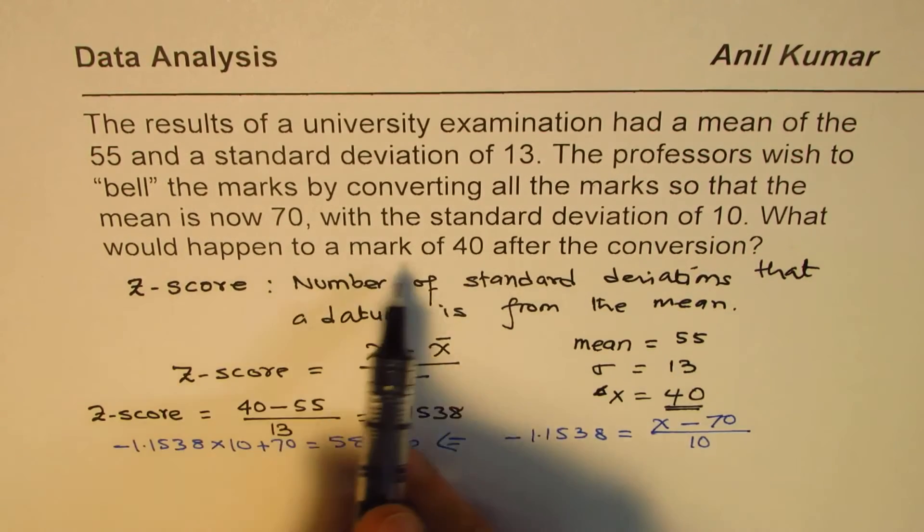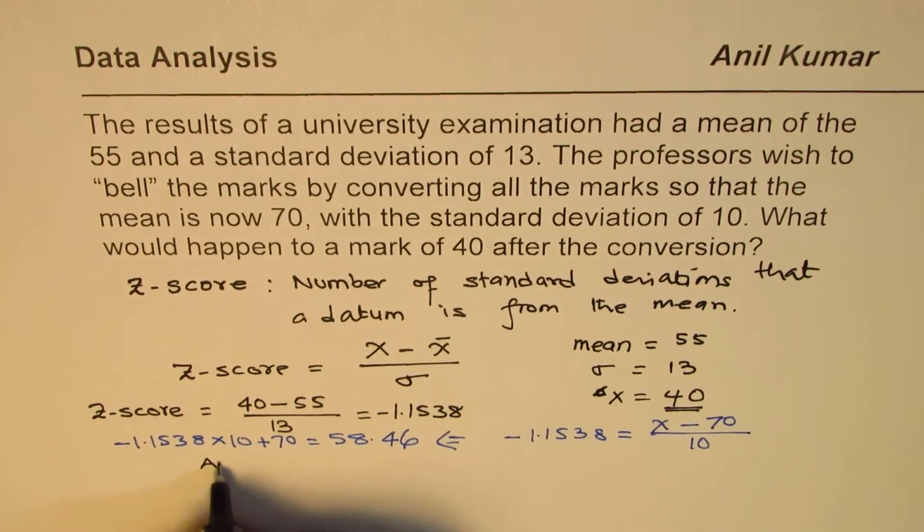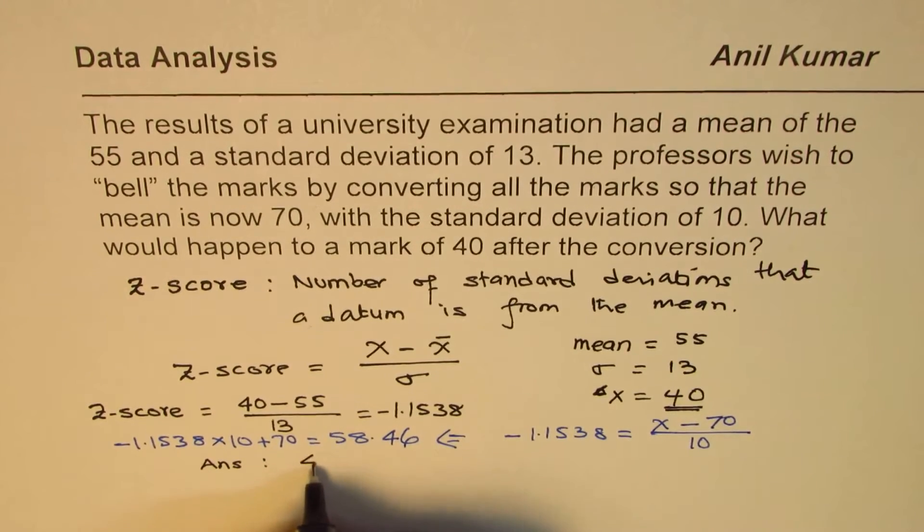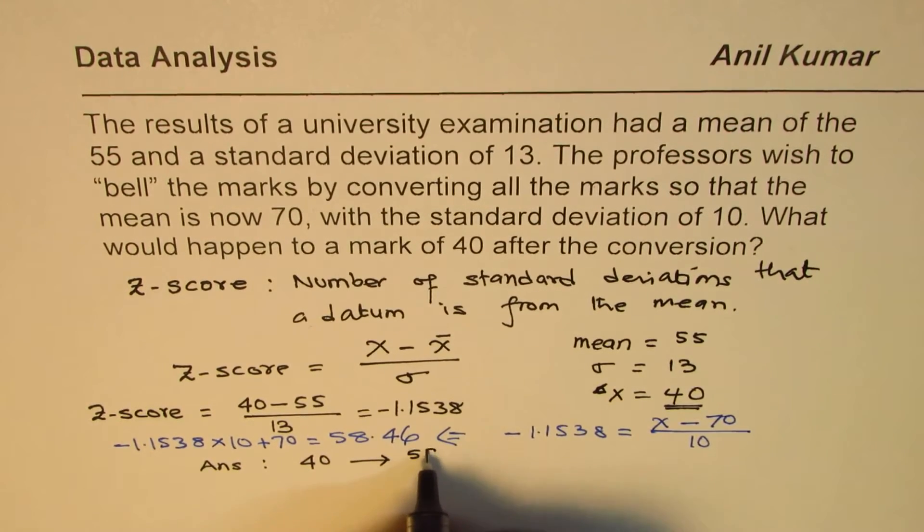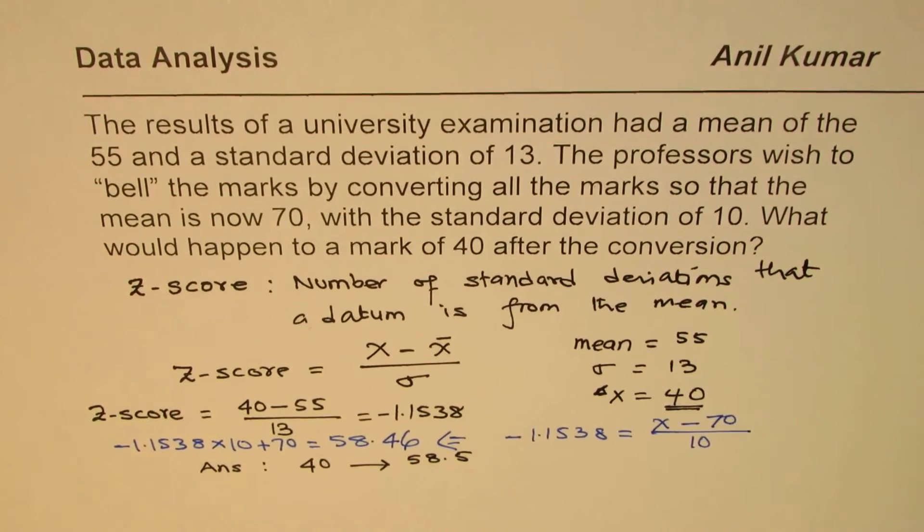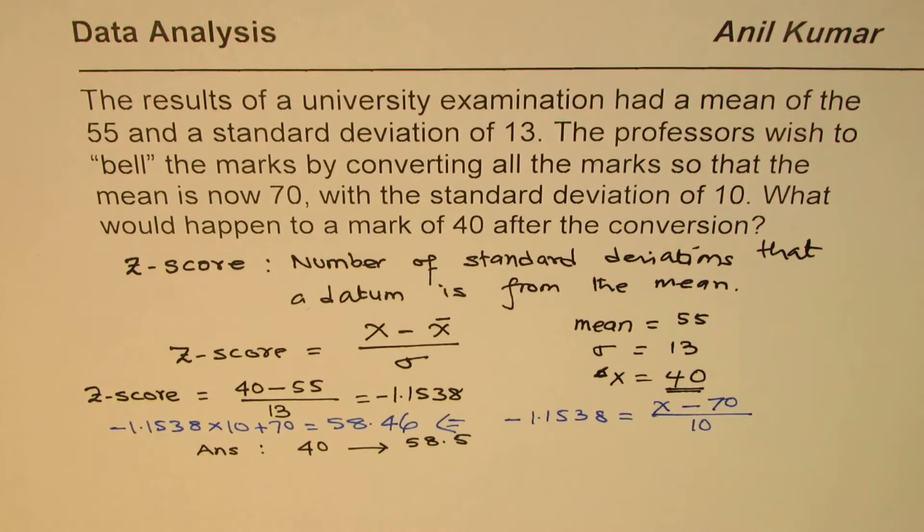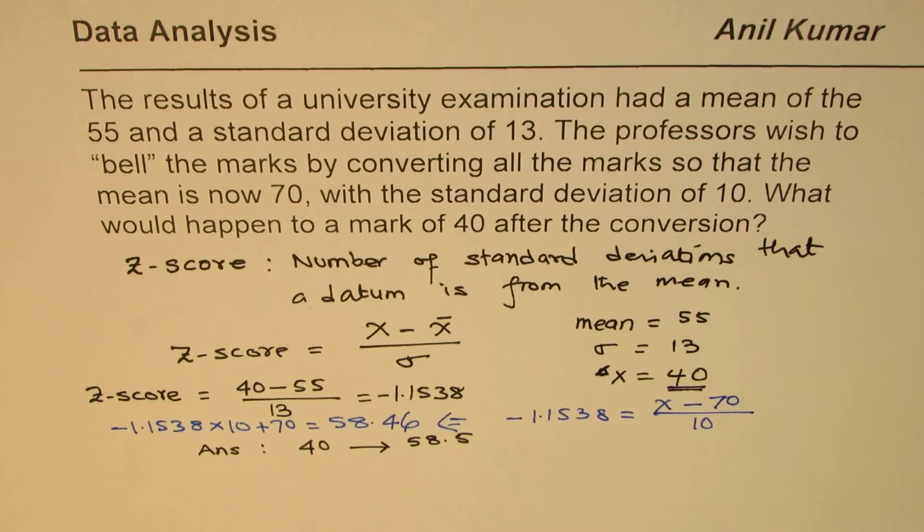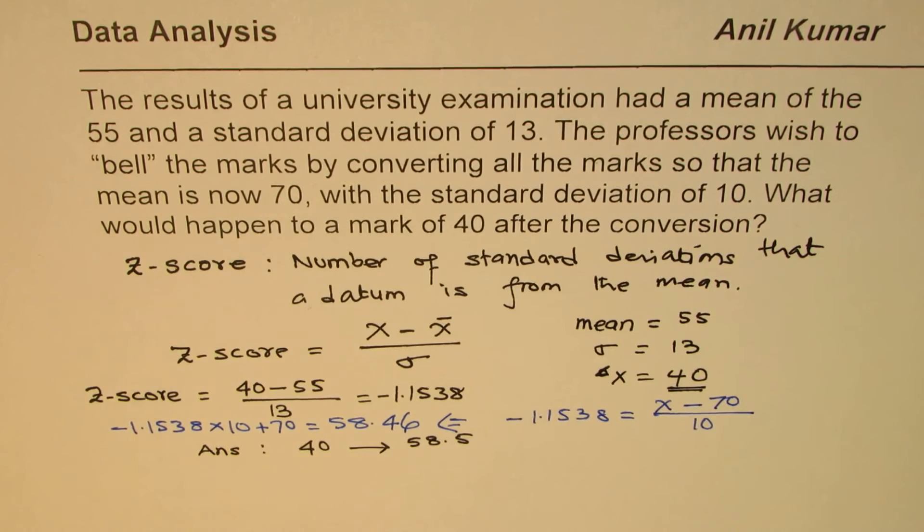Let's round it to one decimal place, so we can say what would happen to the mark of 40? Our answer is 40 will get changed to 58.5. That is the answer, and that is how you should be doing it, because whenever you do such changes, the z-score remains the same. That's the whole idea. I'm Anil Kumar and I hope that helps. Thank you and all the best.